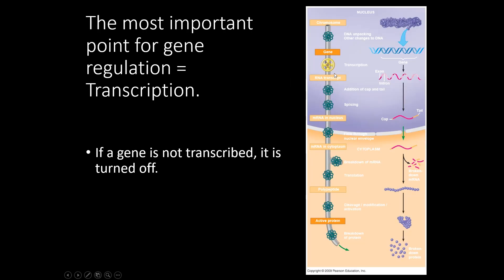The most important control point your cells have for regulating whether a gene is activated is transcription. If you transcribe it, it's probably going to be translated and you'll make the protein. But if you do not transcribe it, none of the other steps happen and you don't make the end product. So transcription is the most important control point.